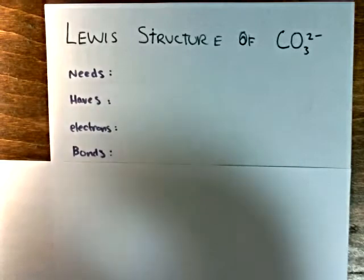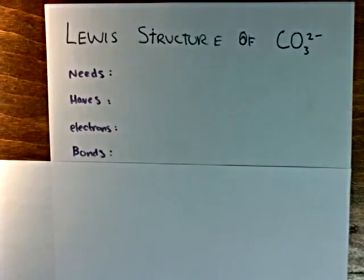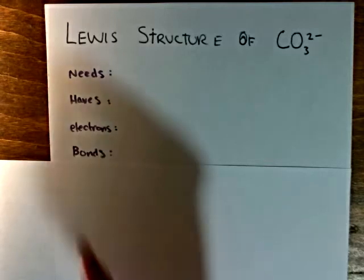And we do that by looking at the needs and the haves. The needs represent the total number of electrons that each atom in the species wants to have in order to obtain a full valence. Carbon and oxygen all want to have 8 electrons in their valence, which means that is a total of 32 electrons.